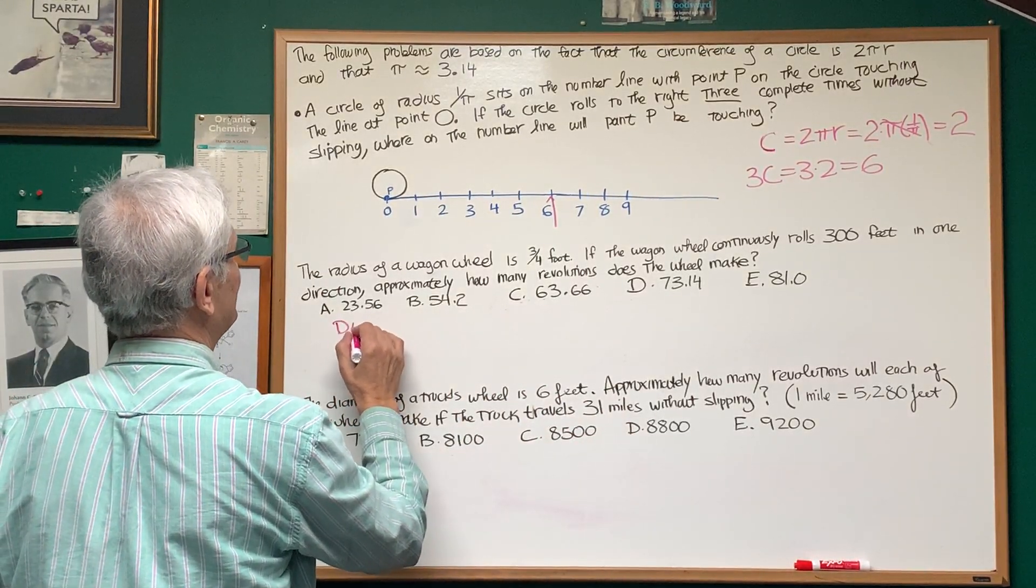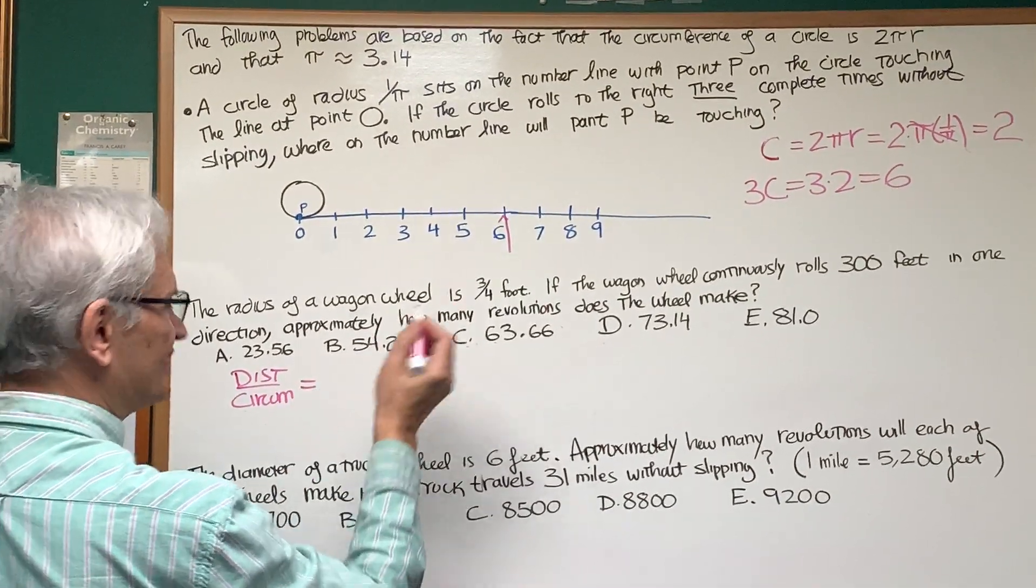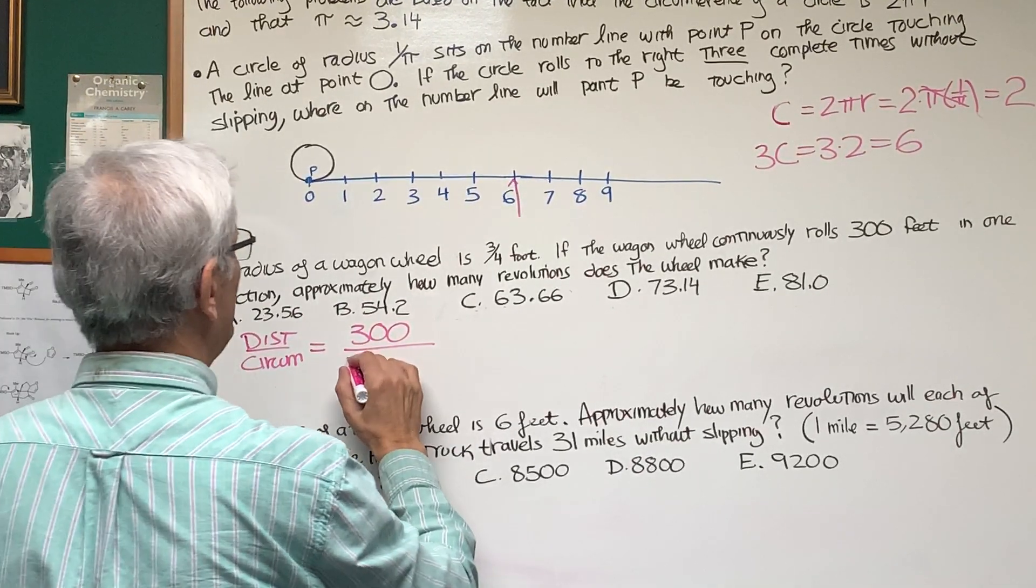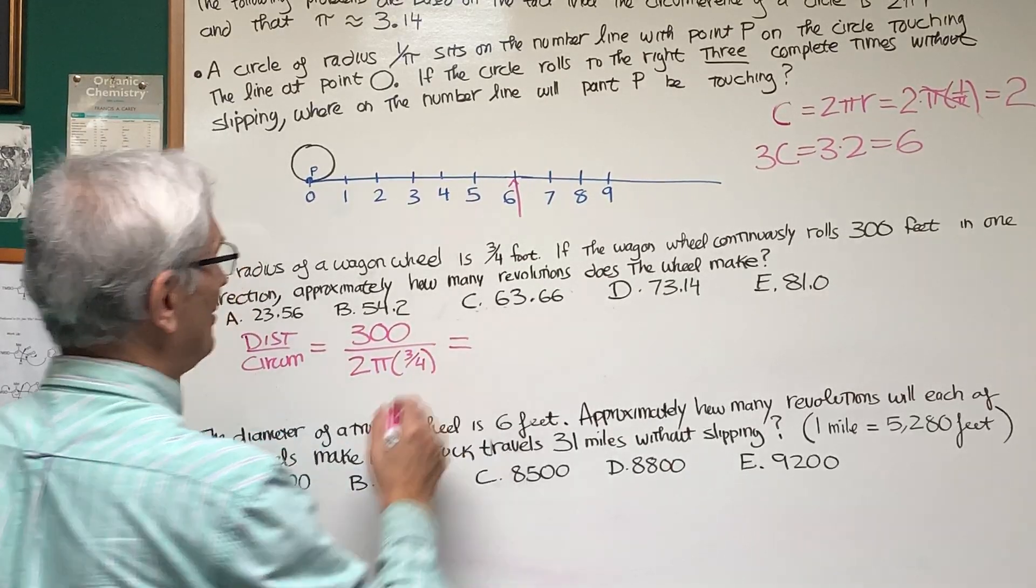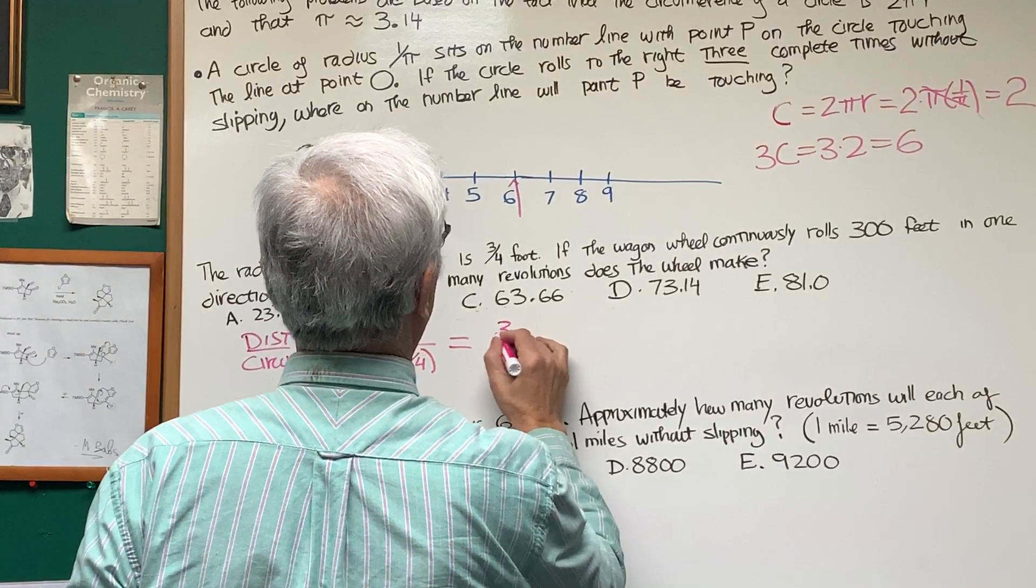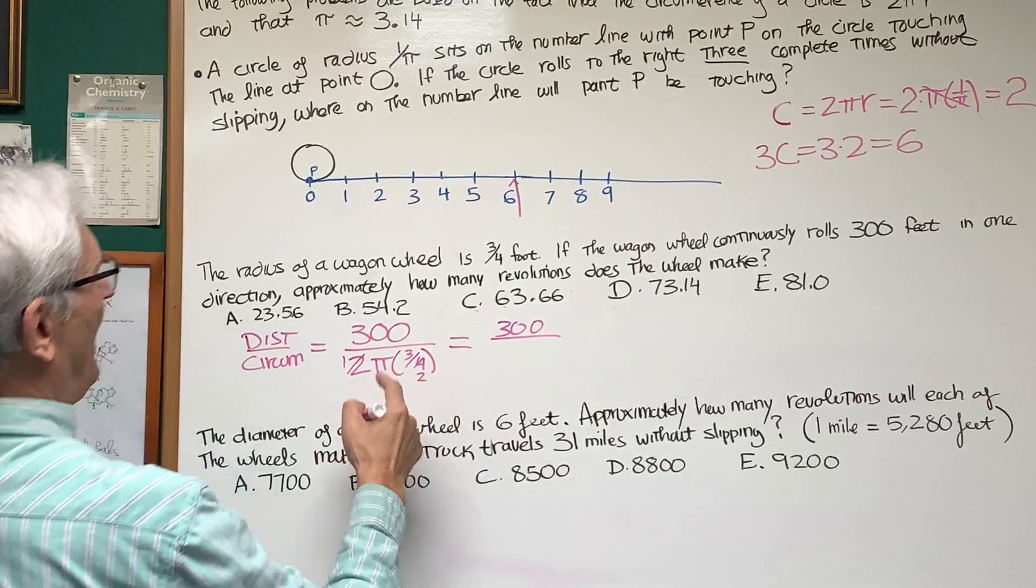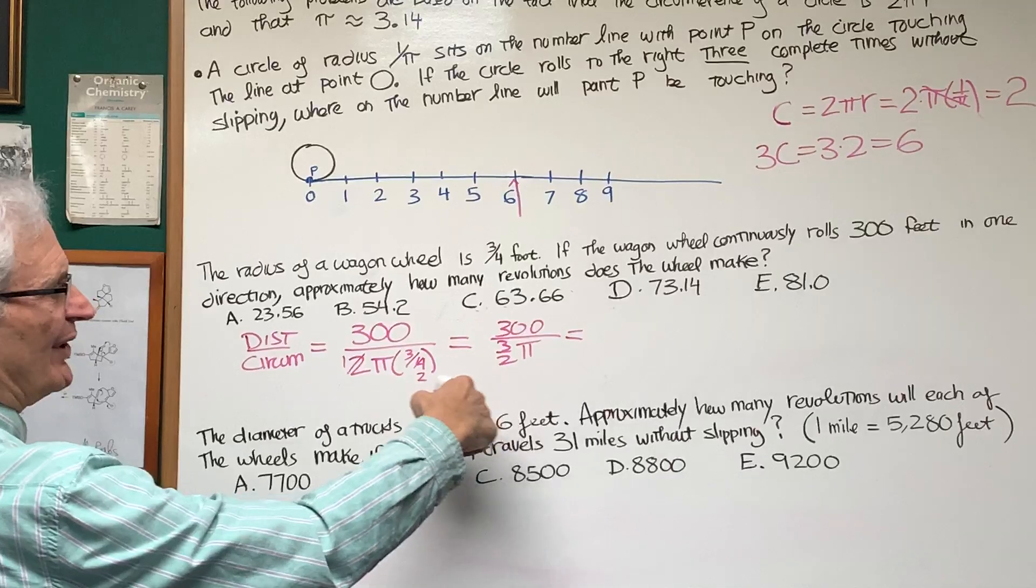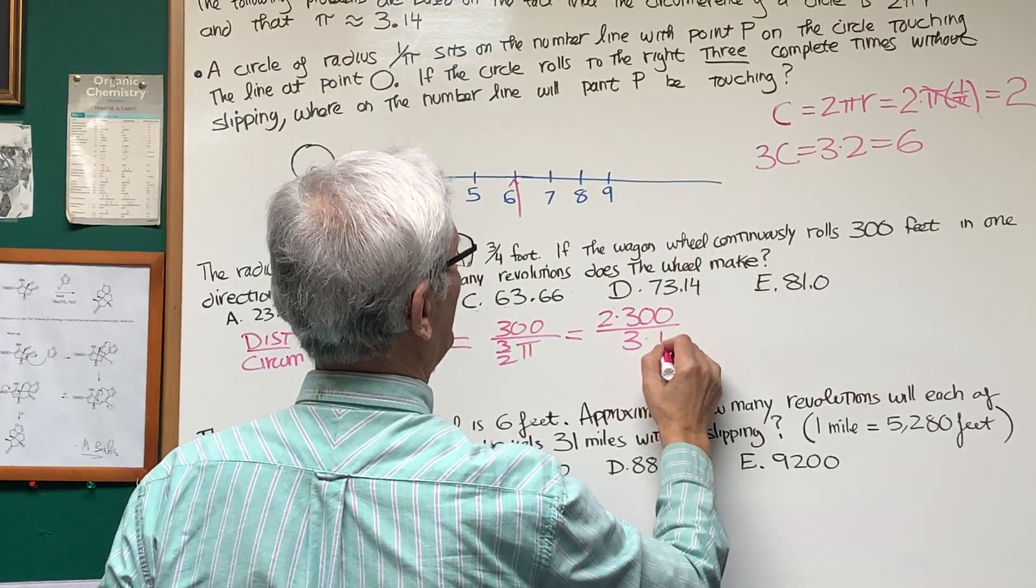It's going to be total distance over the circumference. So the total distance is going to be 300 feet. And the circumference is 2π times 3 quarters. So there's our answer. All we have to do is simplify this complex fraction. What do we have in the denominator? I can cancel the 2 with the 4 and get 3 halves π.